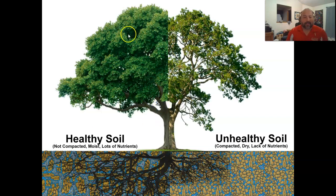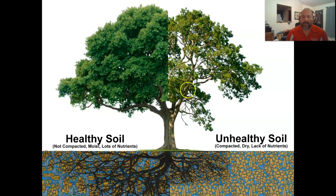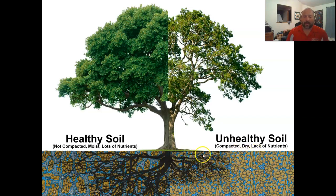Here's a picture of healthy soil — not compacted, moist, lots of nutrients. You can see the PEDs or aggregates with spaces between the soil particles where water, air, and plant roots can move and work their way in, do cation exchange, and pull nutrients out while the tree provides sugars from photosynthesis. This gives us a nice healthy crown and straight trunk — a good looking tree — as opposed to a tree with a thin crown, where we might start thinking about compacted or dry soil, or lack of nutrients underground.